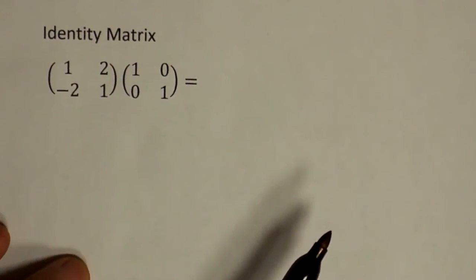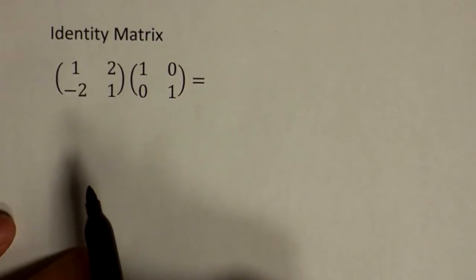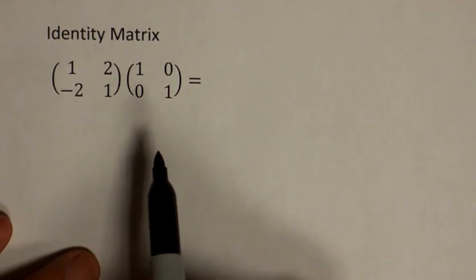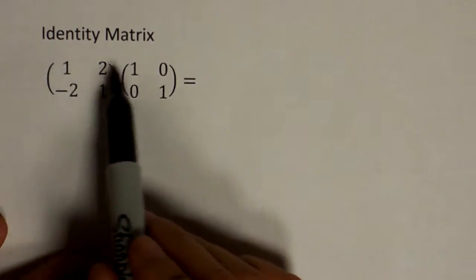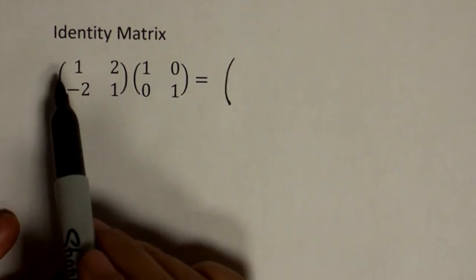You just have to get used to it by practicing a lot. So let me do another matrix multiplication here. And as a result, you'll learn something called the identity matrix. Again, across, down, across, down. If you get used to it, you can just do this mentally.